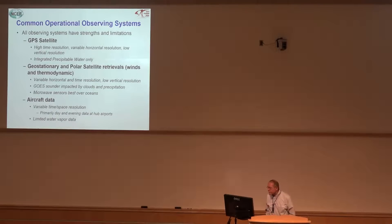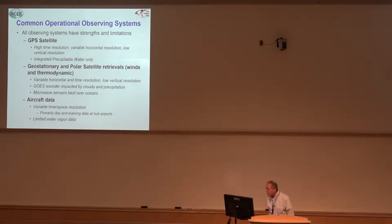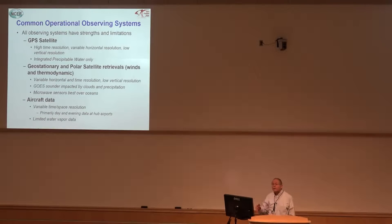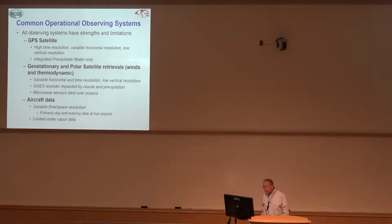Satellite retrievals, whether geostationary or polar, again have low vertical resolution, and for severe weather forecasting we really need information in terms of vertical profiles. The sounder on the GOES satellite — even with GOES-16 — doesn't have a hyperspectral sounder and is still impacted by clouds and precipitation. Aircraft data gives us a lot of temperature and wind data, especially at cruise altitudes, but most aircraft don't have water vapor sensing systems because they're expensive, and airlines didn't want to install them.